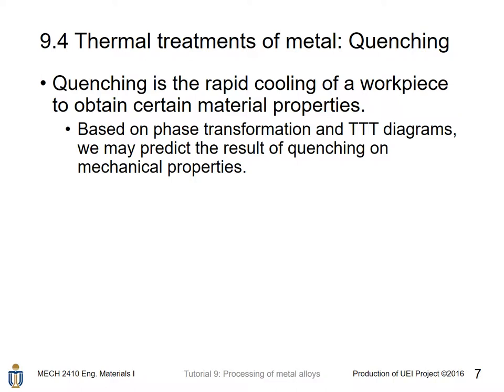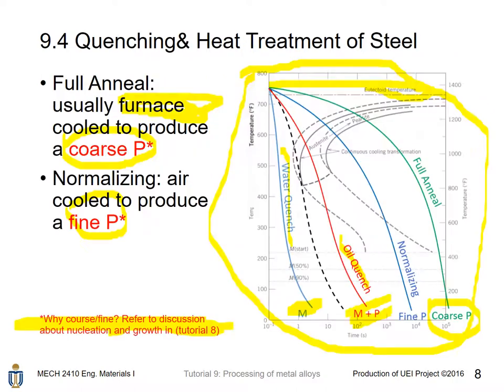Quenching is the rapid cooling of a workpiece to obtain certain material properties. We can predict material properties after quenching based on phase transformation and the TTT diagram. For a different quenching rate, the resultant microstructures within the steel differ.